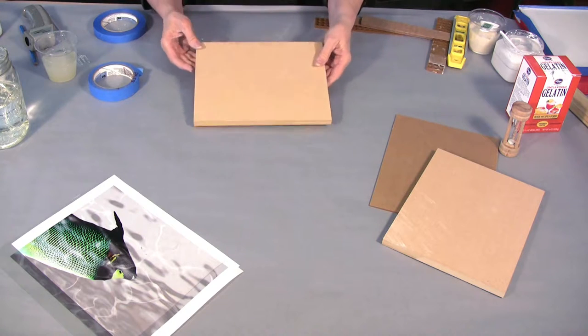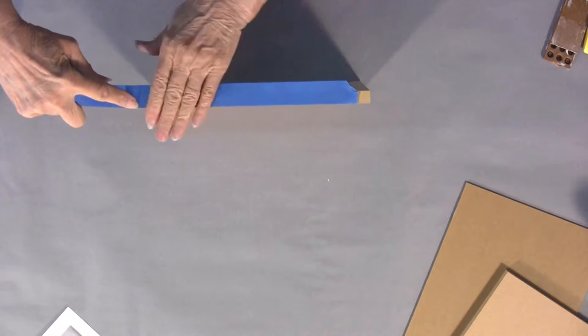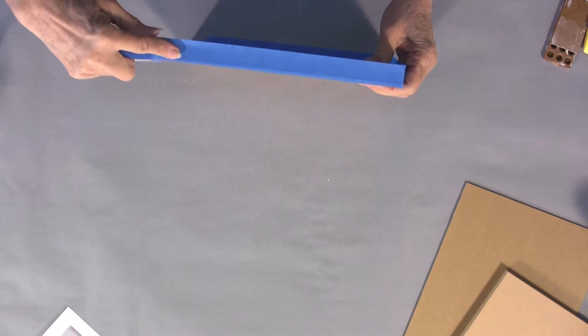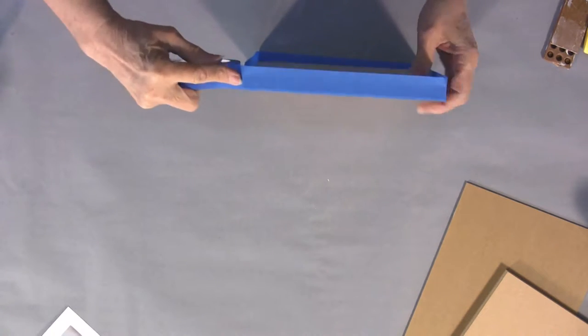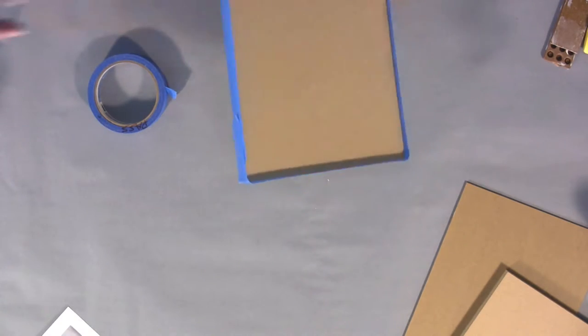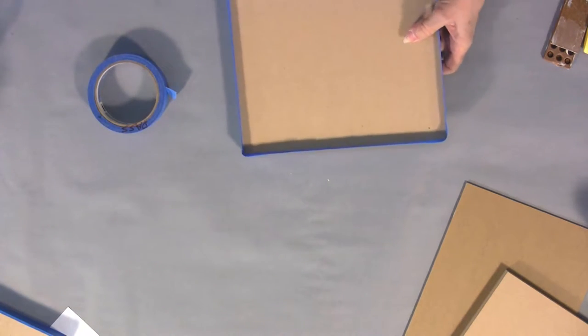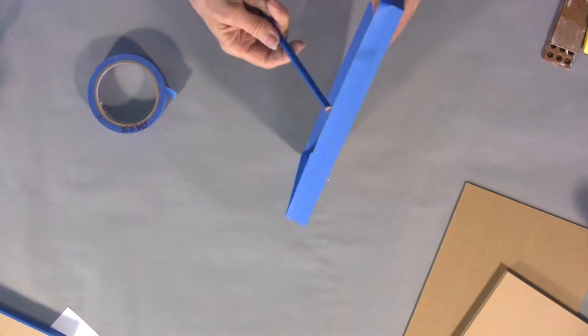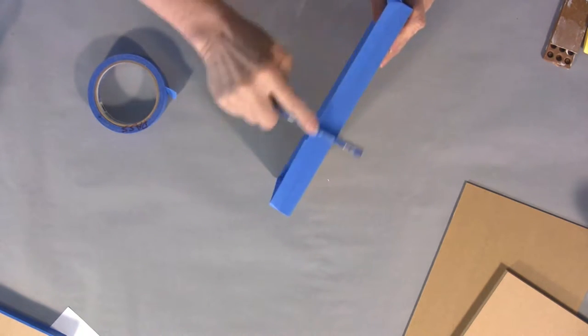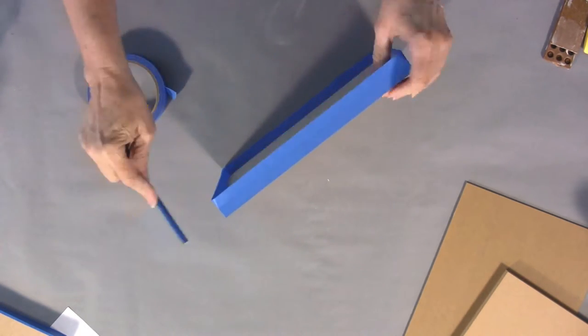I'll rim around this board so that the gelatin when we pour it will stay on the surface. I'm going to take some blue tape and tape it all around the edges. You're going to make two layers on all four sides and when it's done it's going to look like this. You're going to take a round edge of a pencil and press this down really tightly on all sides. We don't want the warm gelatin to be leaking out.